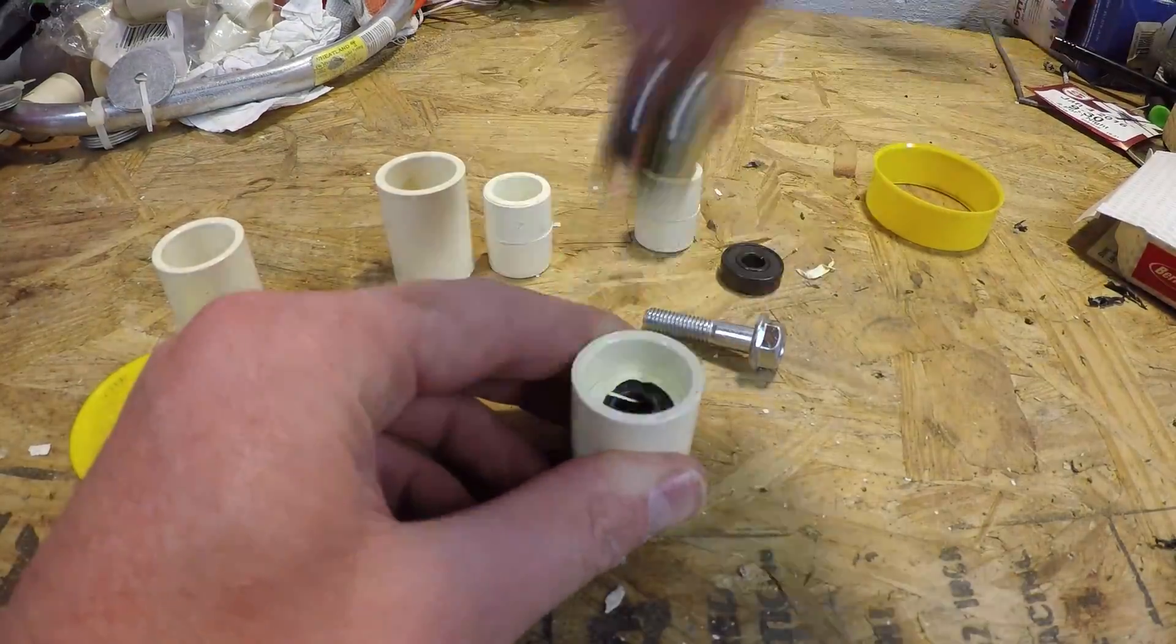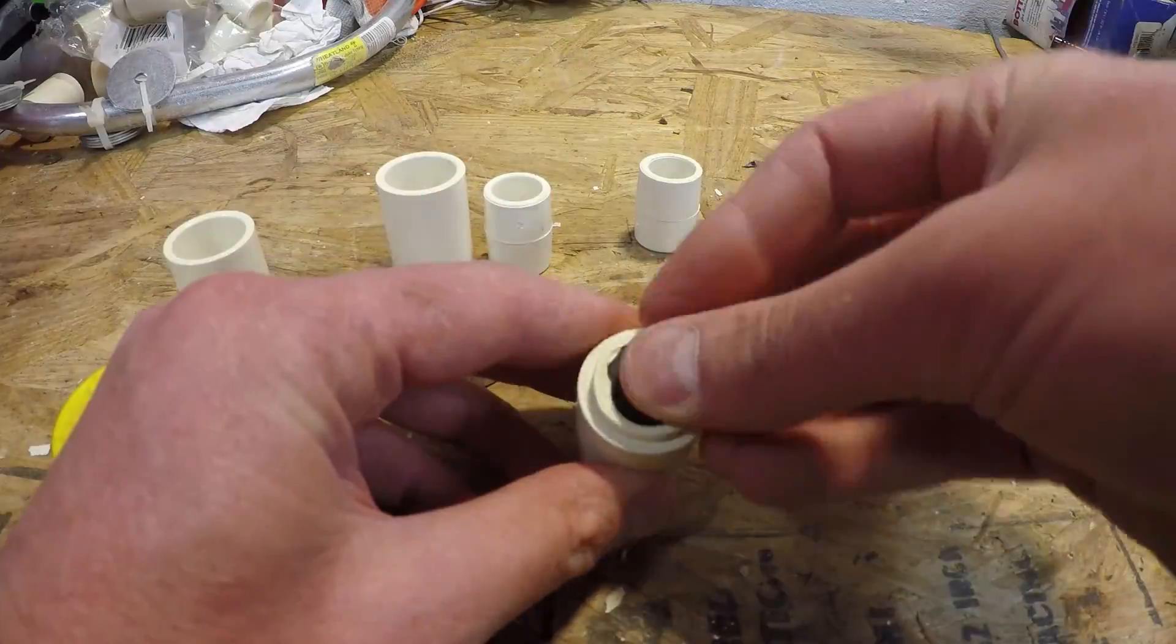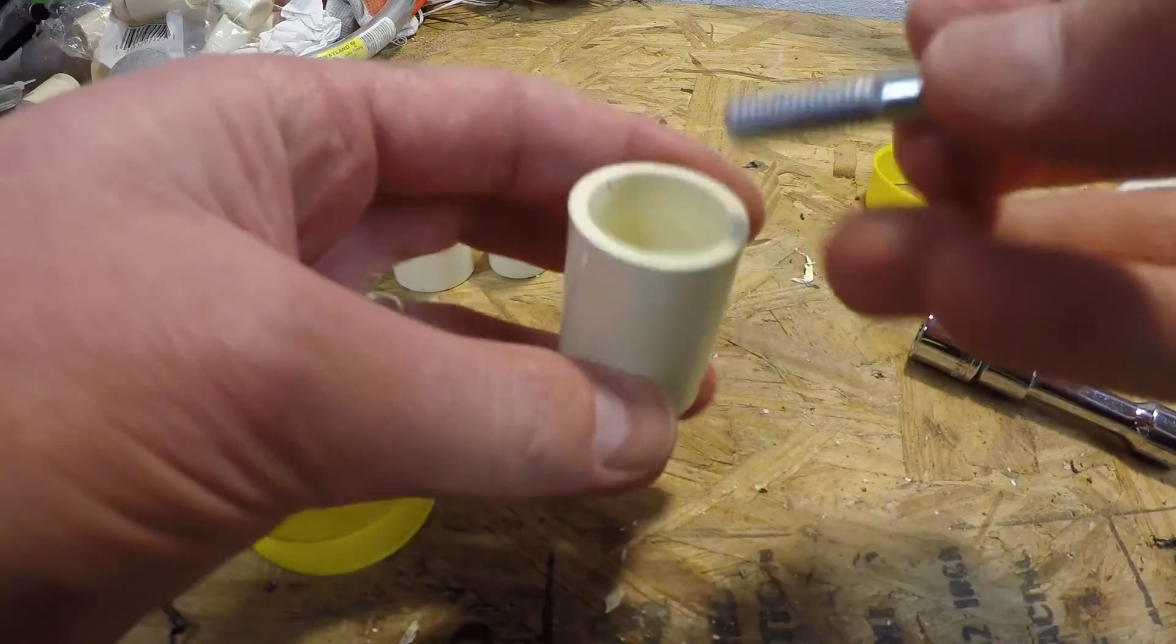Now we're going to repeat that process with a second bearing and stack the two, giving us some really friction-free spin with this bolt that we're going to stick through right here.